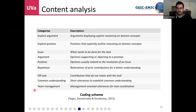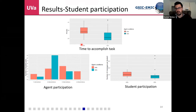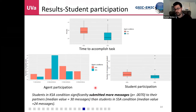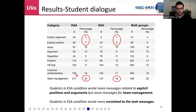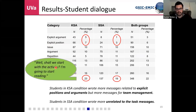We used a pre-post questionnaire and a content analysis coding scheme evaluating different behaviors: team management — how students coordinate for the task — and how they go about solving the task by providing opinions and solutions. Results show that in the knowledge support agent condition, students spent more time on the collaborative task and submitted more messages to their partners. Looking at content, students in the knowledge support agent condition reflected more on domain concepts through explicit argument or position. However, they also seemed to write more team management messages — for example, 'shall we start with this activity' or 'I'm going to start reading.'